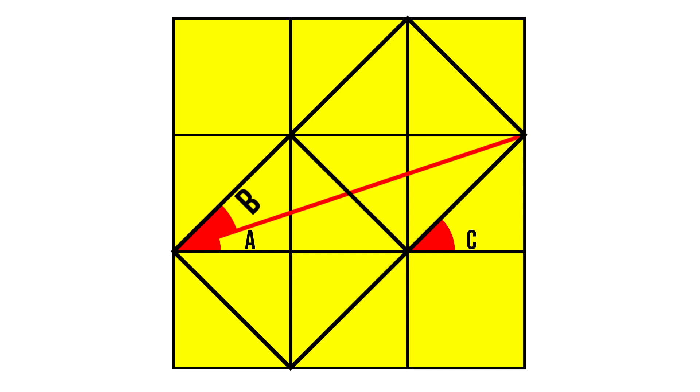So A plus B plus C is 90 degrees. I will leave a link to the Numberphile video down below. And yeah, I hope you enjoyed the video. Bye bye.